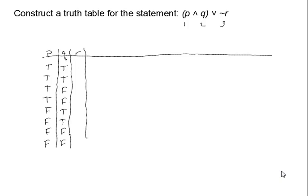Last but not least, for statement R, we are going to go every other. So notice the pattern: we did four and four, we did two and two, and then we did every other. And that gives us eight different combinations.